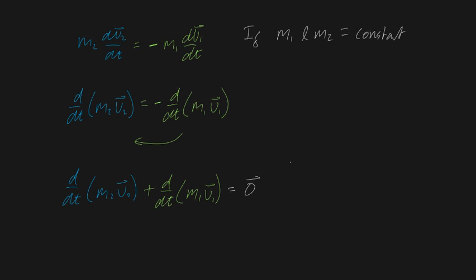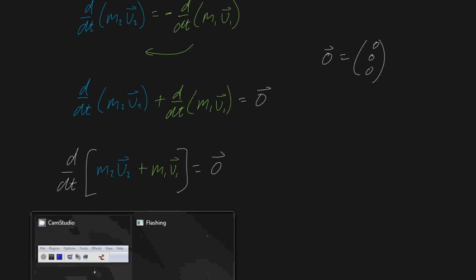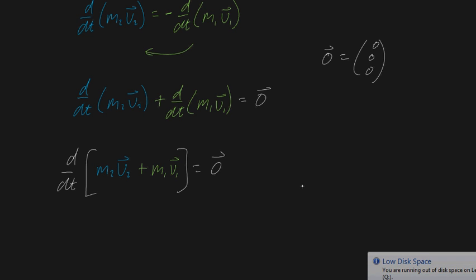We're left with d/dt of (m2 v2) plus d/dt of (m1 v1) equals the zero vector. Notice we're dealing with vectors here — the zero vector just means zero in the x, y, and z coordinates. The differential operator has the distributive property, which means we can bring it outside both terms and write this as d/dt of (m2 v2 + m1 v1) equals the zero vector. Differentiating a whole chunk of terms is the same as differentiating each individual term.